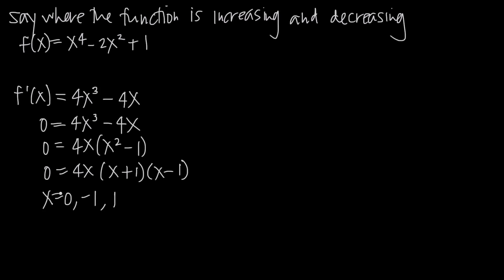These numbers are the critical numbers of the function — they are potential critical points. Critical points are points where the function changes direction from increasing to decreasing or from decreasing to increasing. We have to prove they are critical points using the first derivative test. To do that, we draw a number line and plot these potential critical points.